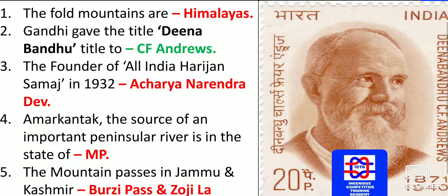Gandhi gave the title Deenbandu to C.F. Andrews. If asked about Deshbandu, that title belongs to Chittaranjan Das. The founder of All India Harijan Samaj in 1932 was Acharya Narendra Dev.